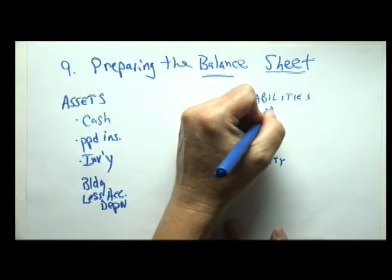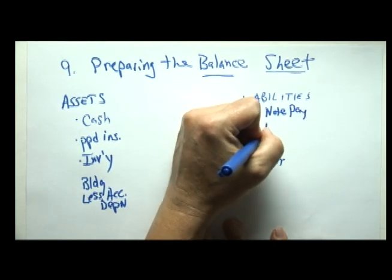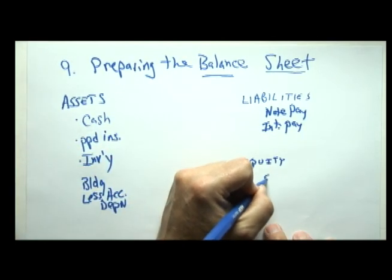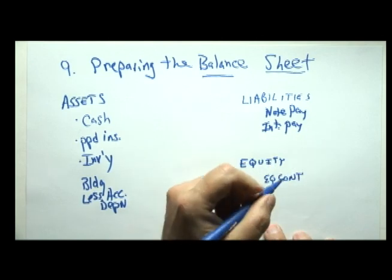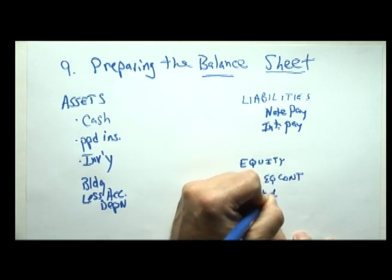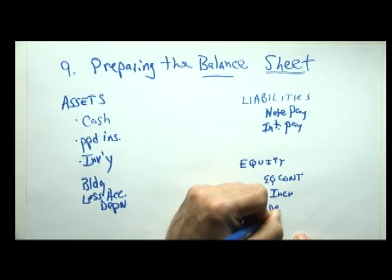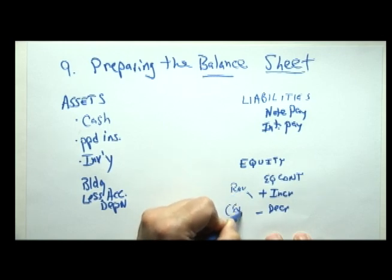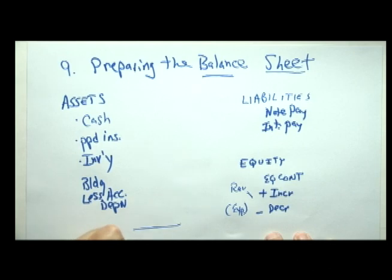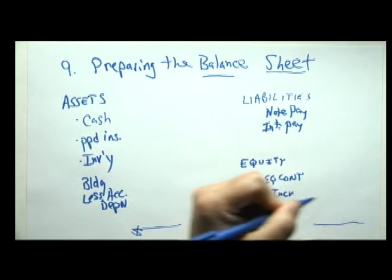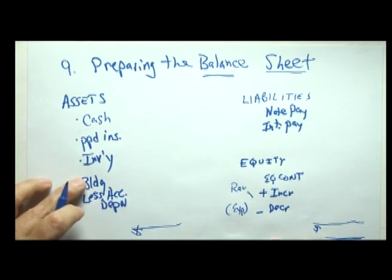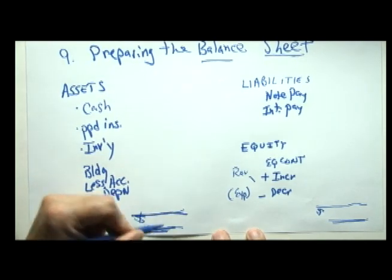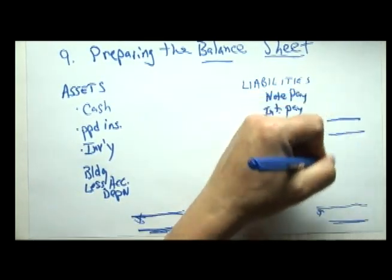Our liabilities include the note payable to the bank plus the interest payable on that note. Our equity consists of the equity contributed by the owner, plus increases in equity during the period, minus decreases in equity. The increases are our revenues; the decreases are our expenses. In the end, we have to make sure that our total assets equal our total liabilities and equity.